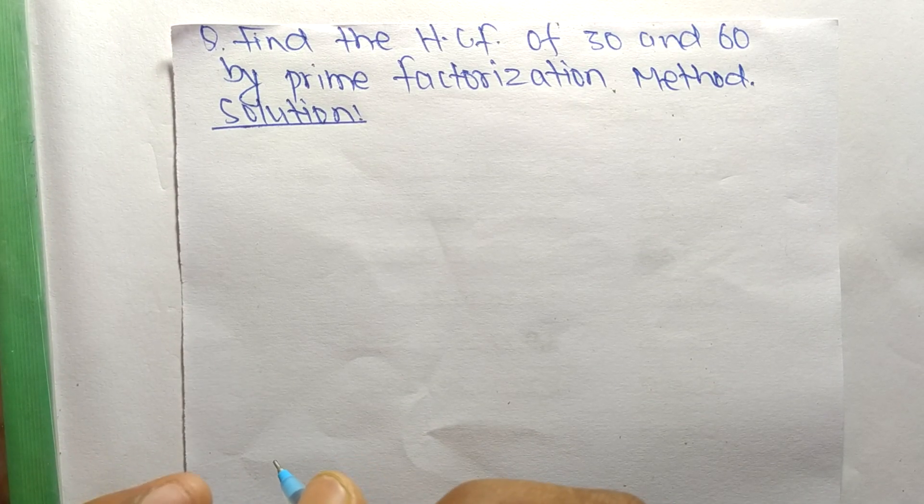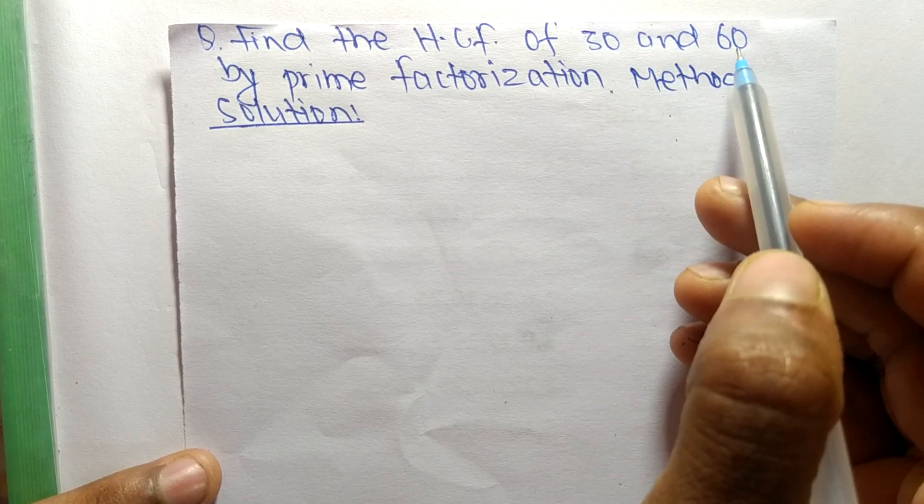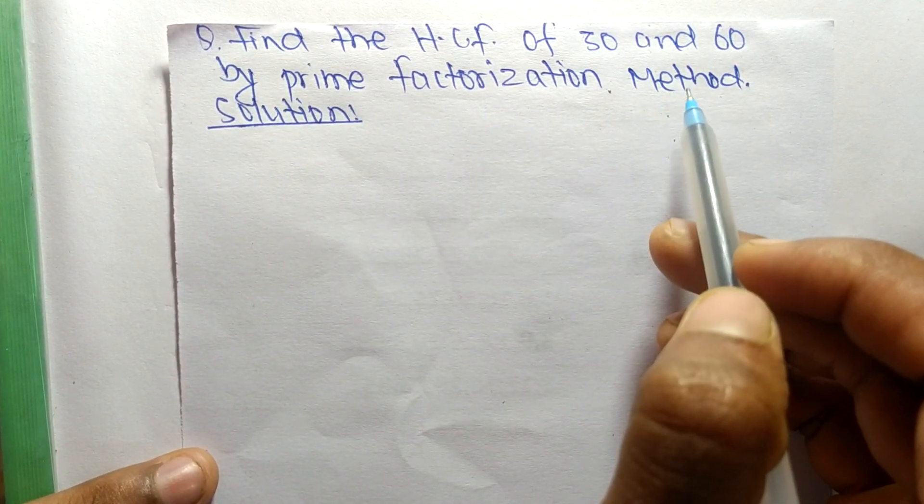So today in this video we shall learn to find the HCF of 30 and 60 by prime factorization method.